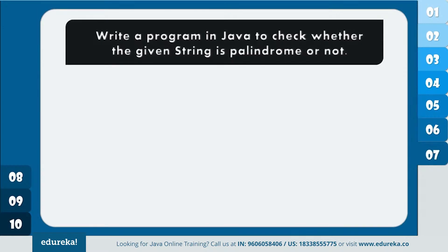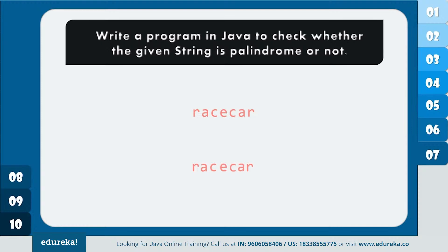Let's see the next program: write a program in Java to check whether the given string is palindrome or not. Here I have to check whether the given string 'race car' is a palindrome — meaning even when I reverse this particular string, it will be 'race car' itself. Let's now understand the code logic behind this palindrome check.